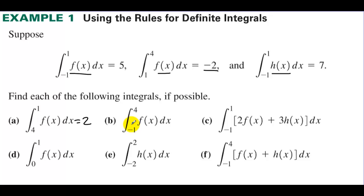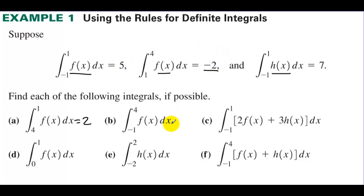On B, integral from negative 1 to 4. Well, if we integrate from negative 1 to 1 and then 1 to 4, and add the two together, that's like integrating from negative 1 to 4. So 5 plus negative 2 — this one is 3.